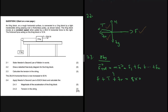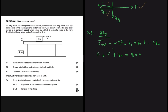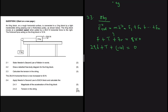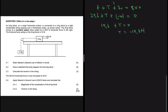Since the block moves at constant speed, a = 0. So: 29.6 + T − 10 = 0, because friction opposes motion and has a negative value. This gives 19.6 + T = 0, so T = −19.6 N. This makes sense because tension opposes the motion, so it should be negative.